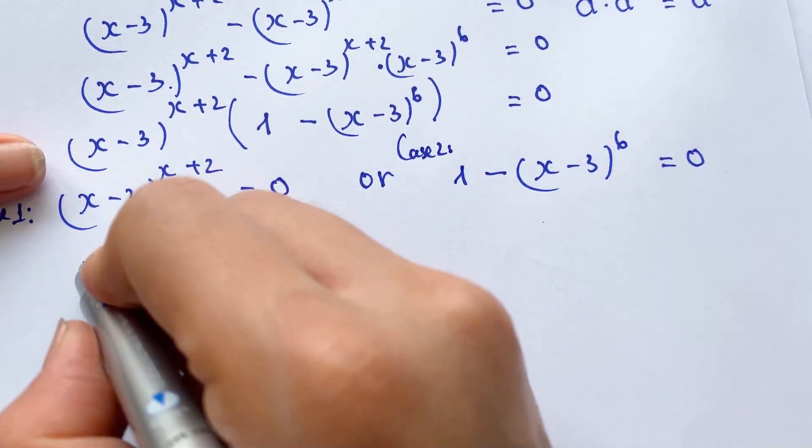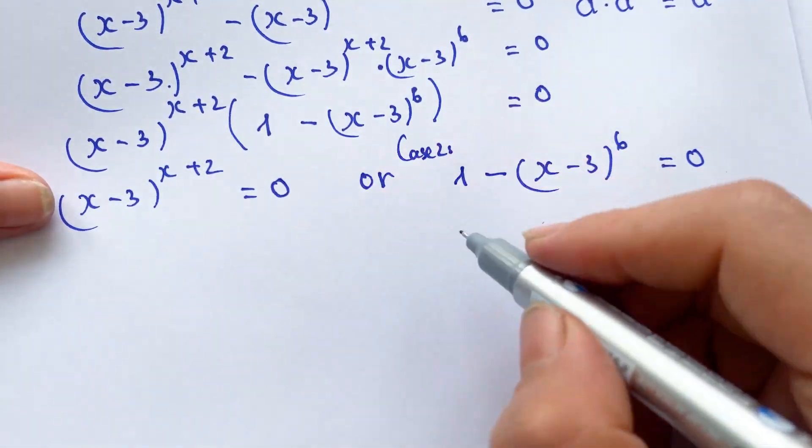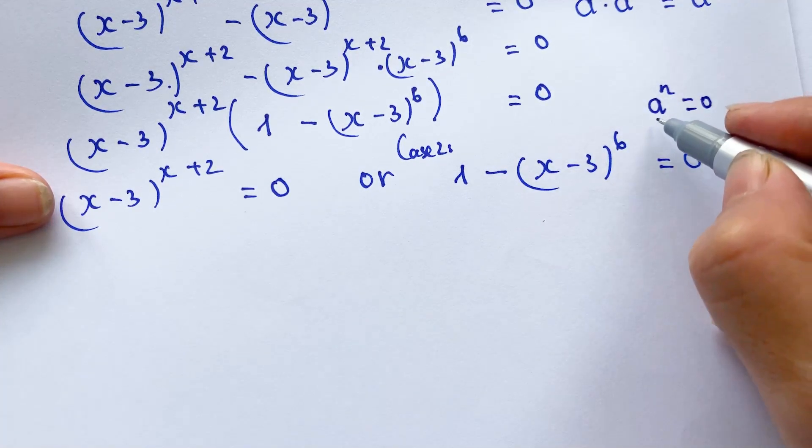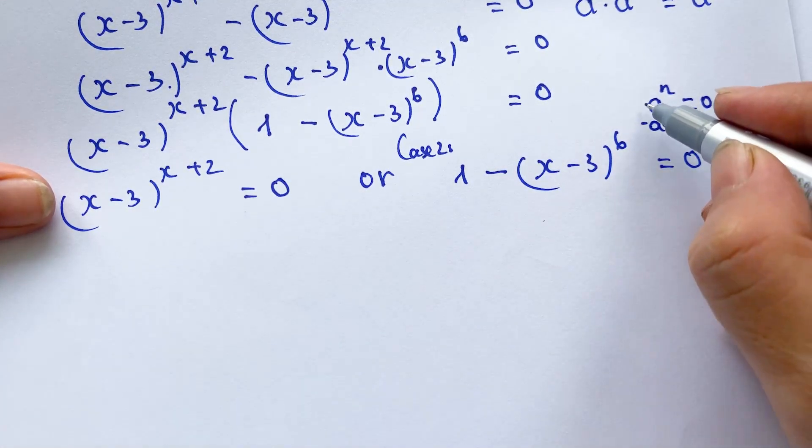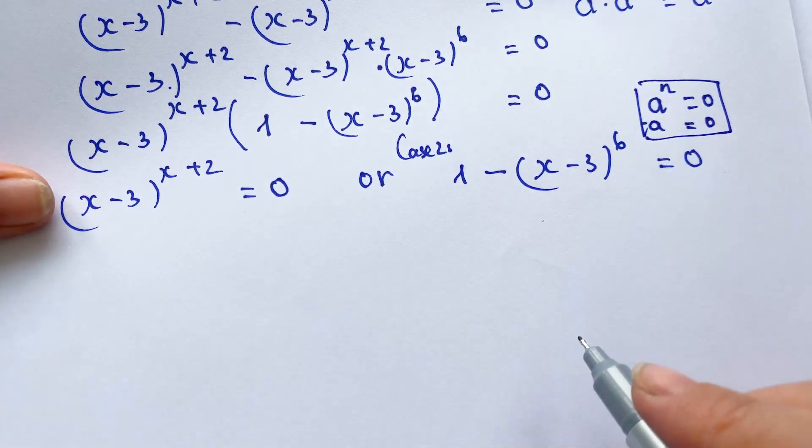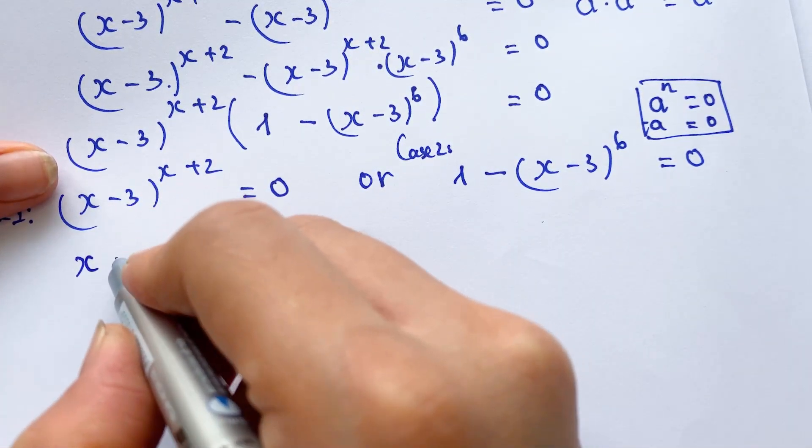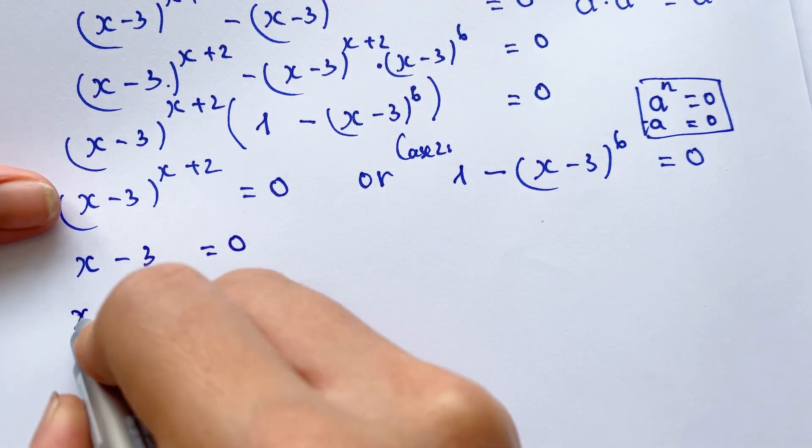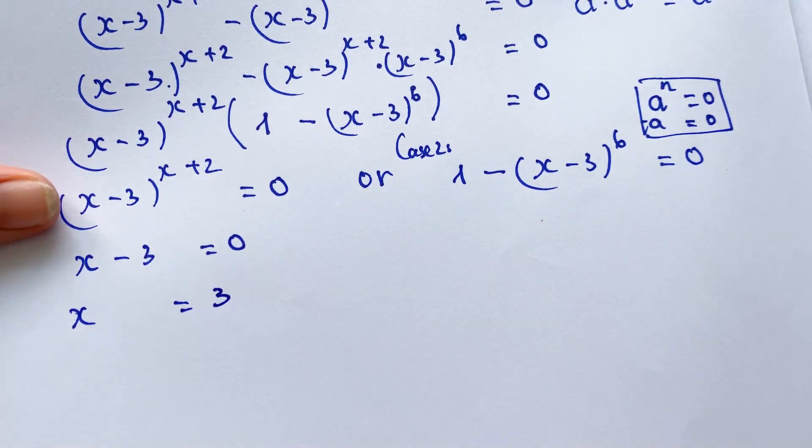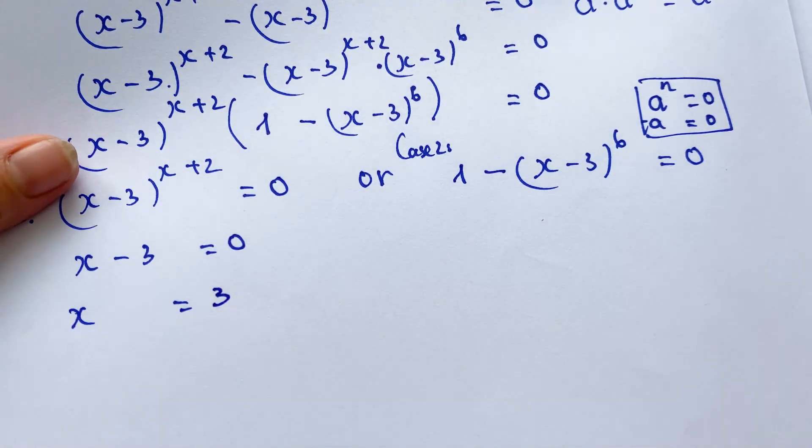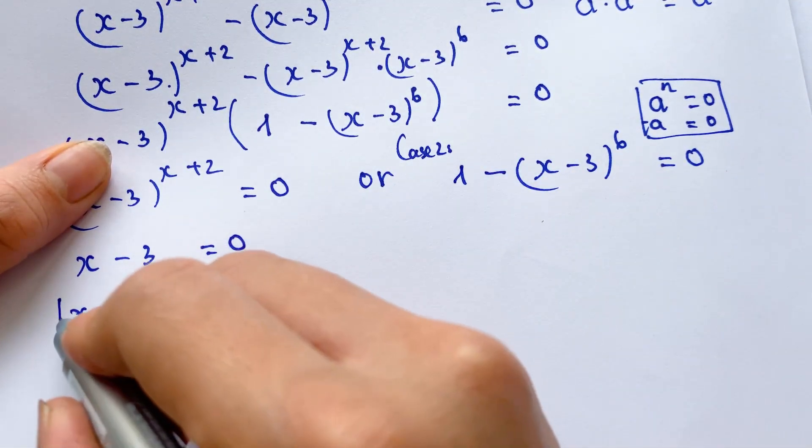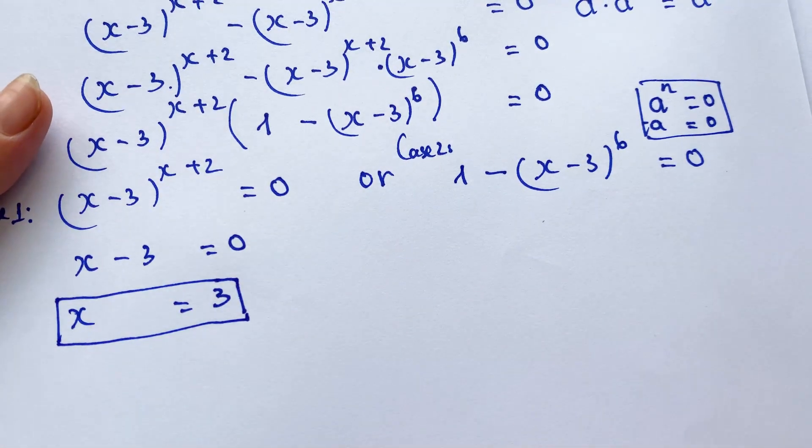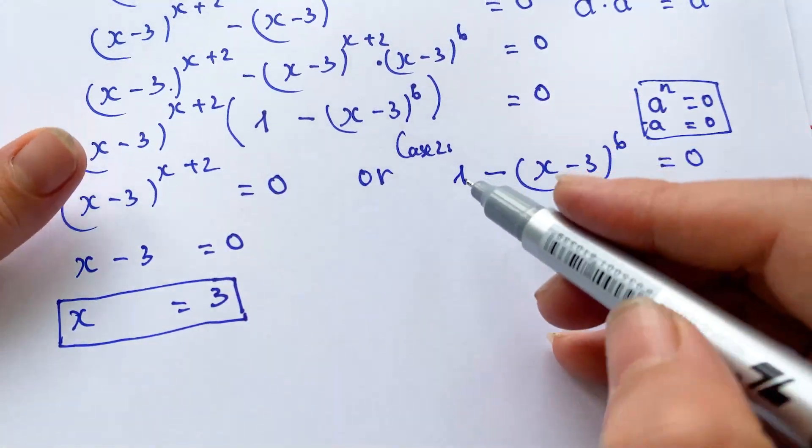So, here, everyone can see, we can say a^n equals 0. In this case, a equals 0. Therefore, you can say x-3 equals 0, so x equals 3. And so, we have the value of x, firstly x₁ equals 3 for the equation.